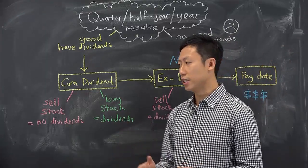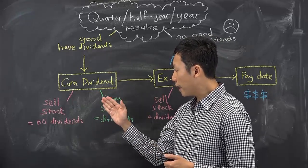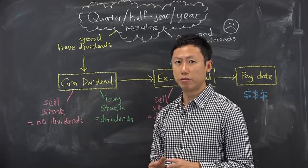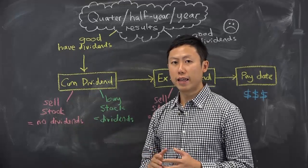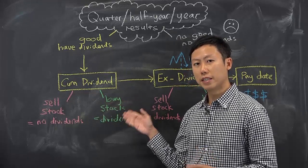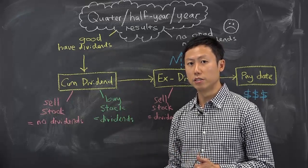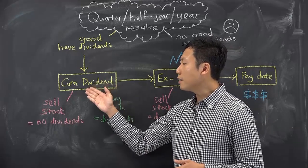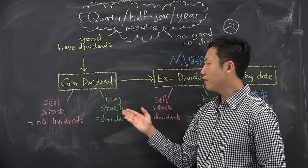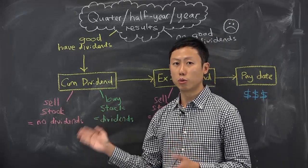What does it mean at these different stages? Let's take cum dividend first. If you are holding the stock and you decide to sell during the cum dividend period, you will not receive any dividends. But if you don't have the stock and you decide to invest during the cum dividend period, you will receive the dividends. Cum dividend means alongside with dividend — as simple as: if you buy, you get the dividend; if you sell, you don't get the dividends.